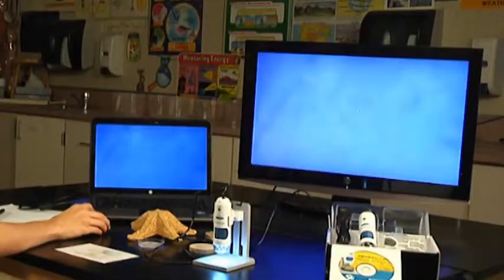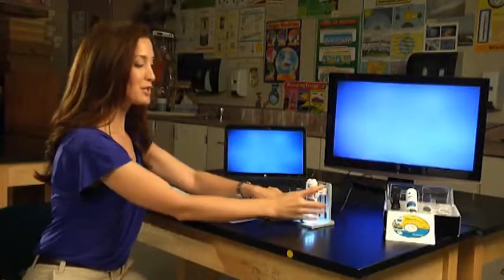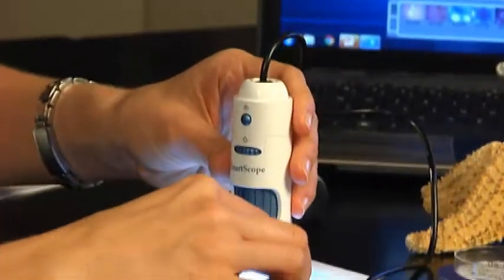First, just double click on the image and that will bring it into full screen mode. As I mentioned, you can use the SmartScope like a traditional microscope. So let's start by taking a look at a bee wing slide.